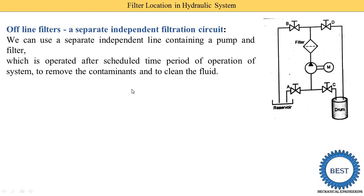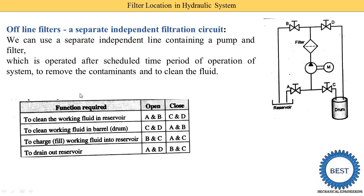Case 1: to clean the working fluid in the reservoir. Oil is taken from the reservoir by opening valve A. Valve C is closed so oil does not go to the drum. Oil flows from valve A to the pump, then through the filter where contamination is removed. After the filter, valve B is opened and valve D is closed, so the cleaned oil is supplied back to the reservoir.